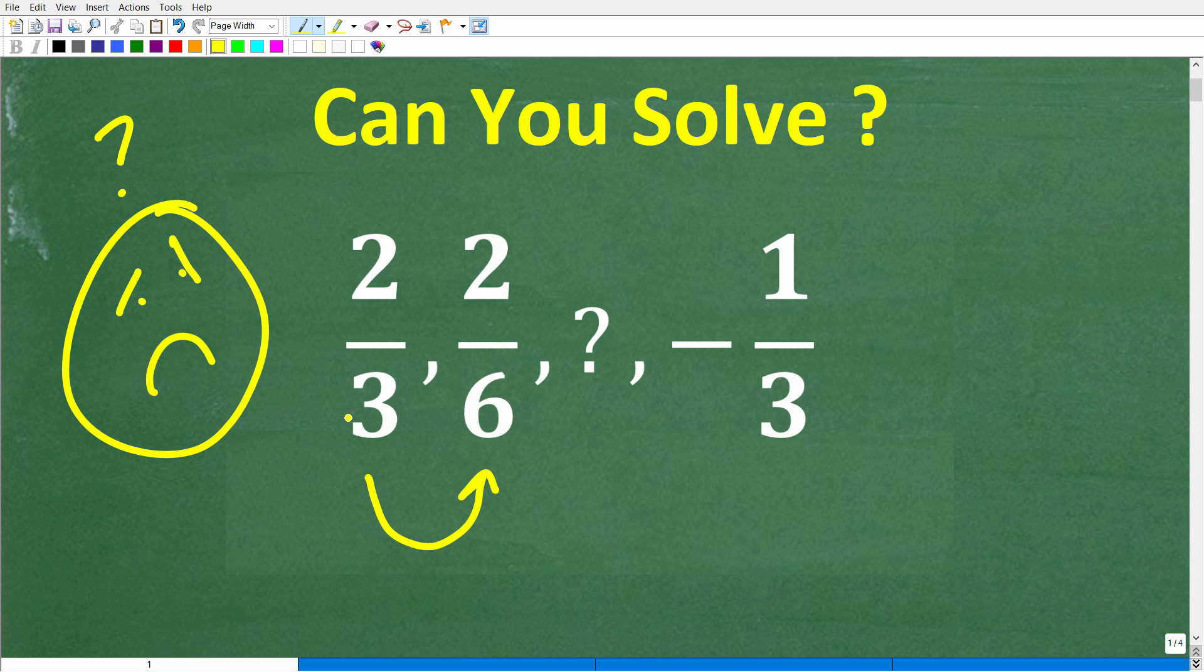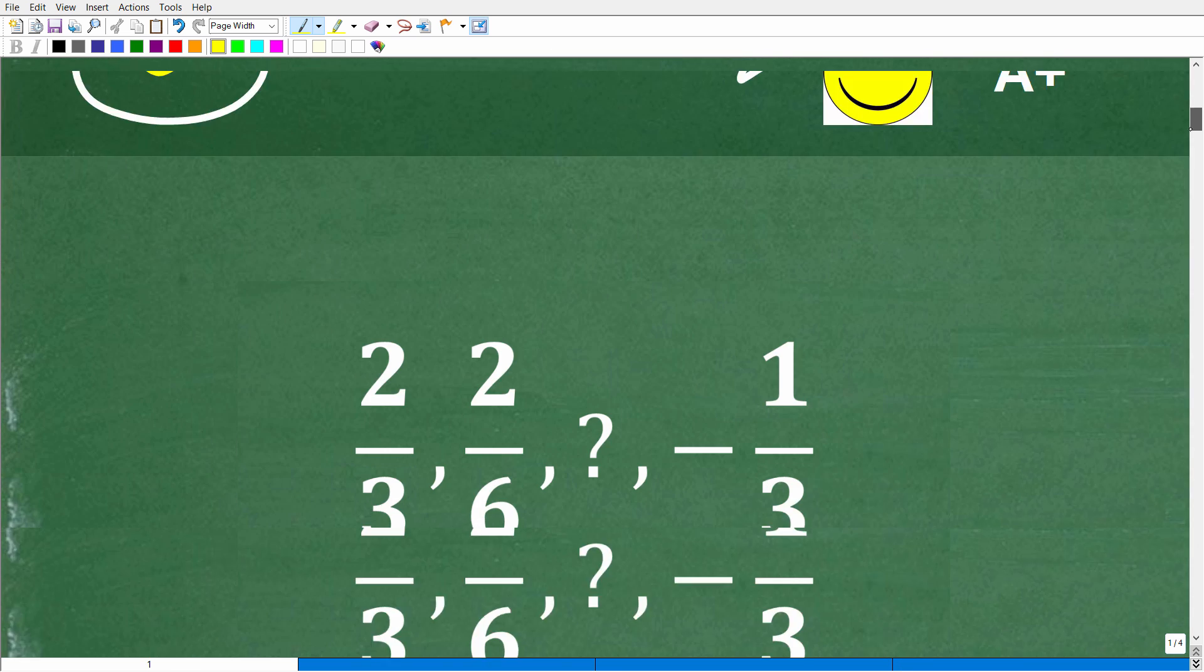So to go from two-thirds to two-sixths, there is a pattern, some sort of rule that if we apply that rule, we're going to go from here to here. And if we apply that rule again, we're going to go from the missing number to negative one-third. All right, so let's go ahead and get into the solution right now.